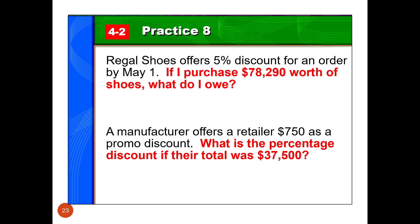In these two practice examples, we've got Regal Shoes offers a 5% discount for an order by May 1st. If I purchase $78,290 worth of shoes, what do I owe? So I'll take my original purchase price, multiply it by the percentage discount, which means I get $3,914.50 off.